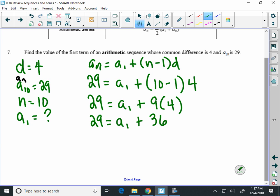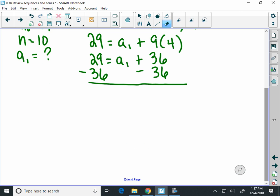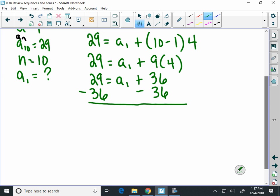And we can subtract 36 from both sides. And once we do we figure out what the value of a sub 1 is. And 29 minus 36 is negative 7.